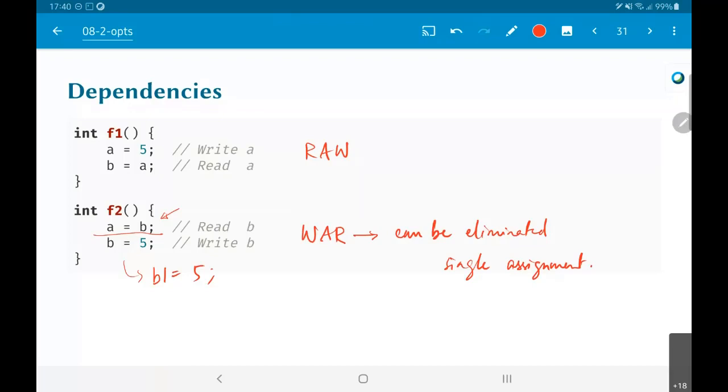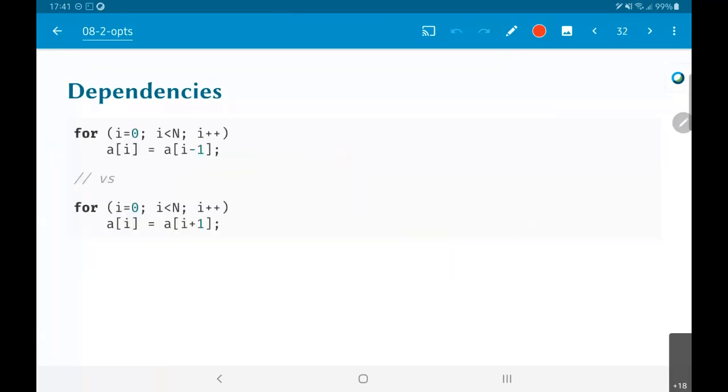Functional programming languages fundamentally don't have this problem of write after read hazards, and they allow you to do a lot more optimizations—or rather, they make it easier to do certain kinds of optimizations.